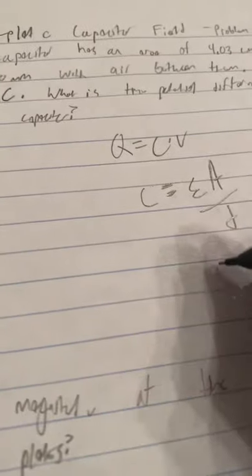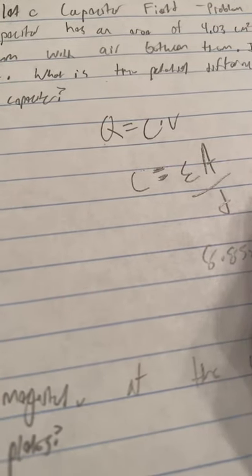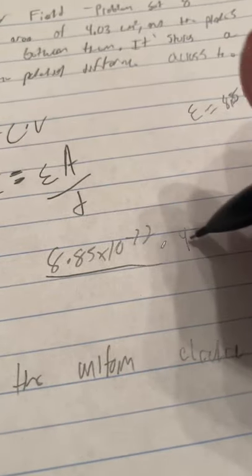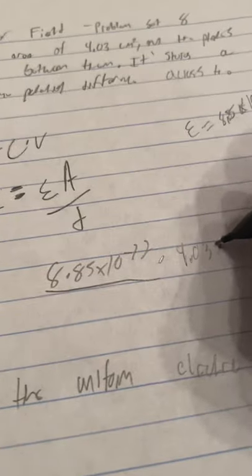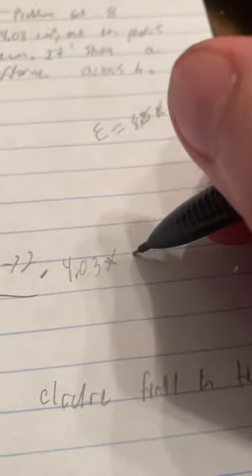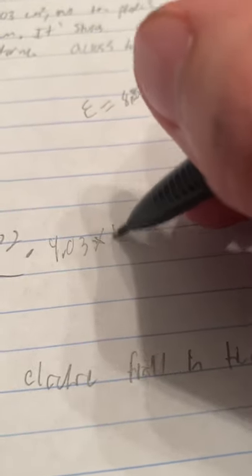So now epsilon is always the same and it's going to be 8.85 times 10 to the negative 12. Okay, so now you put that right here times the area which is 4.03, but since we need that in meters we're going to have to convert that over.